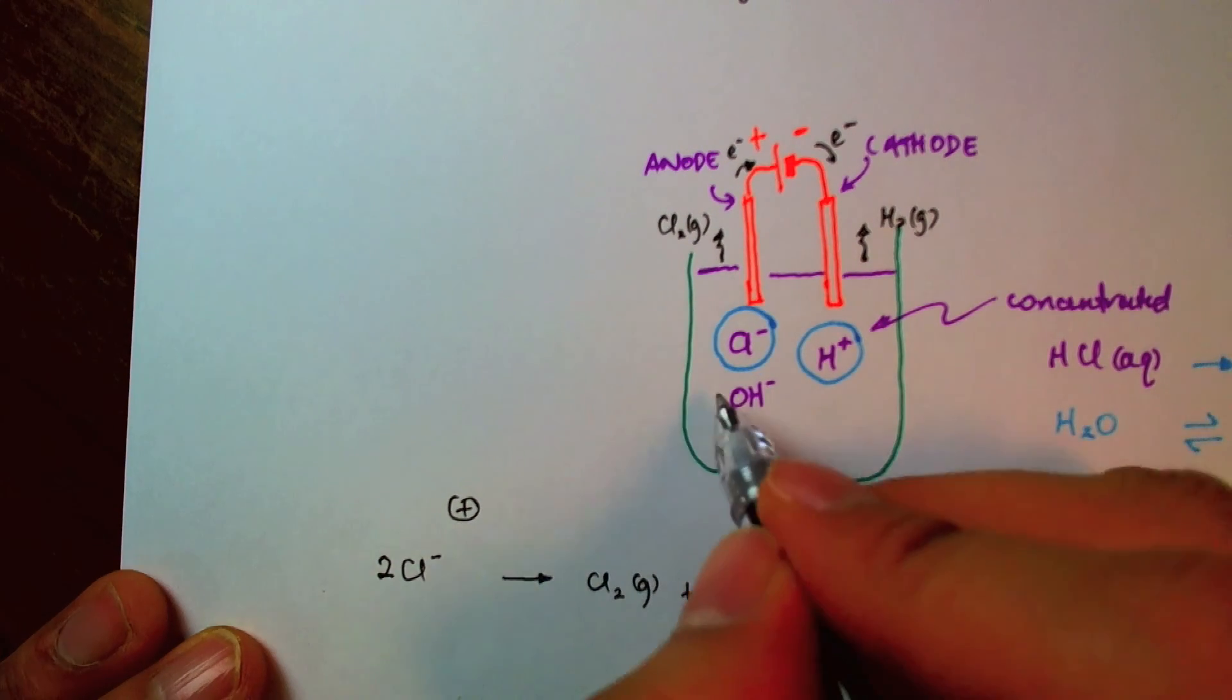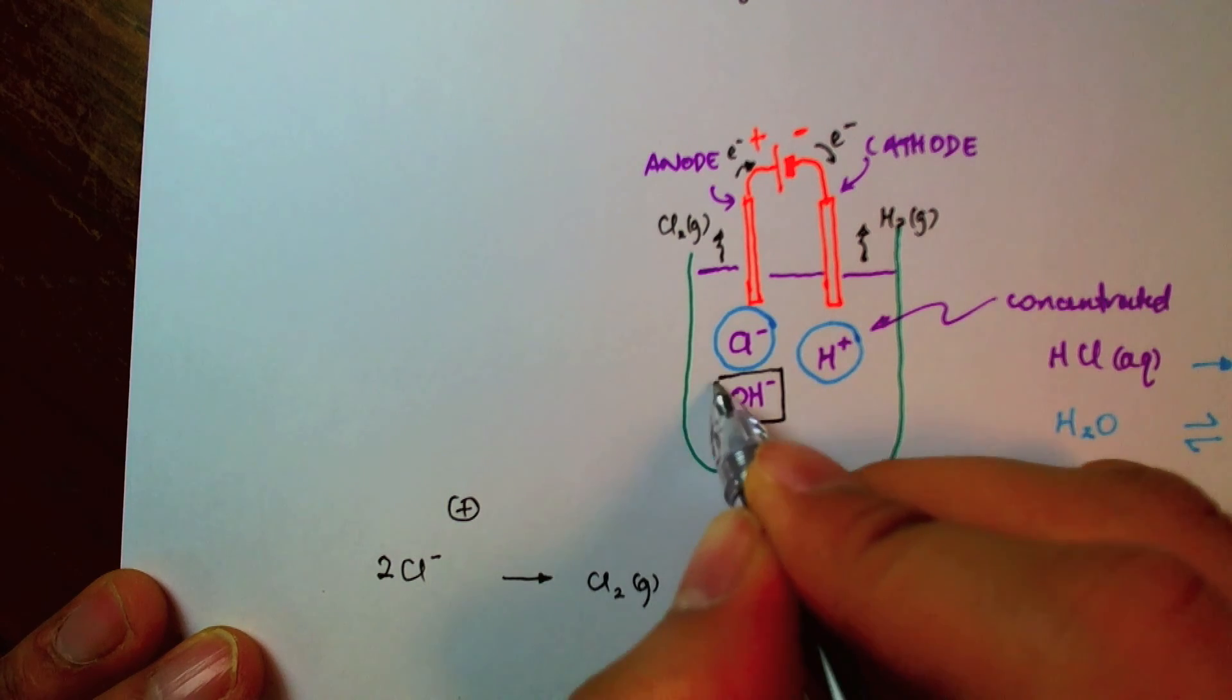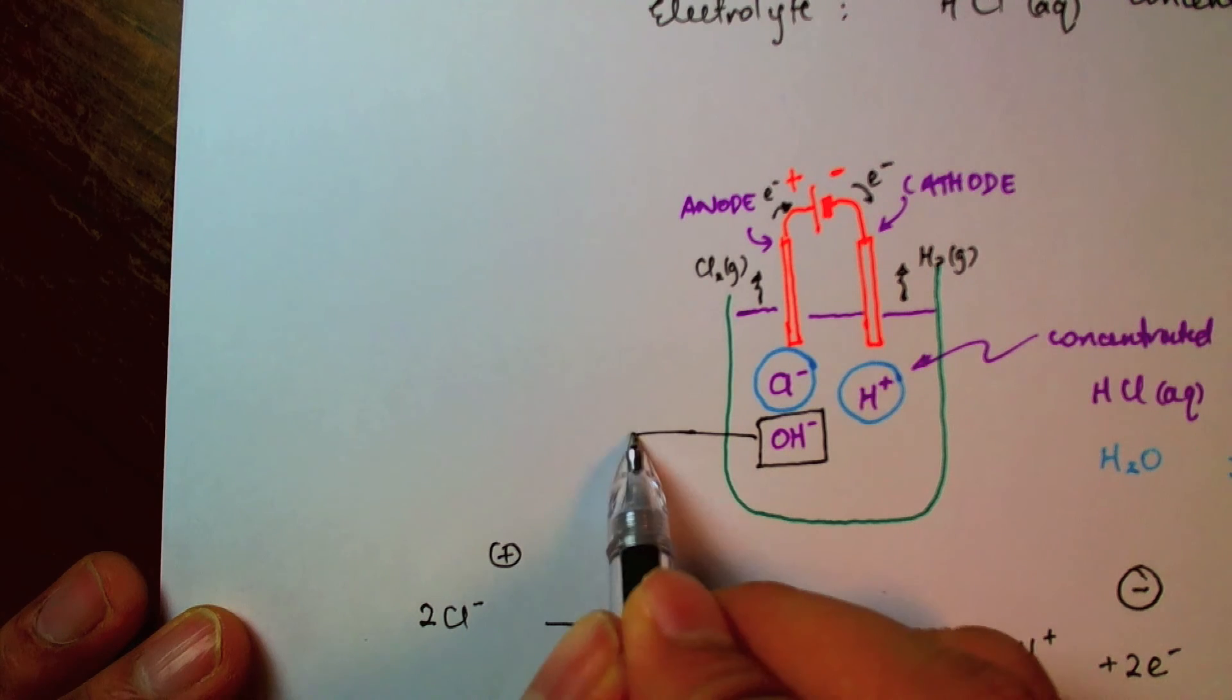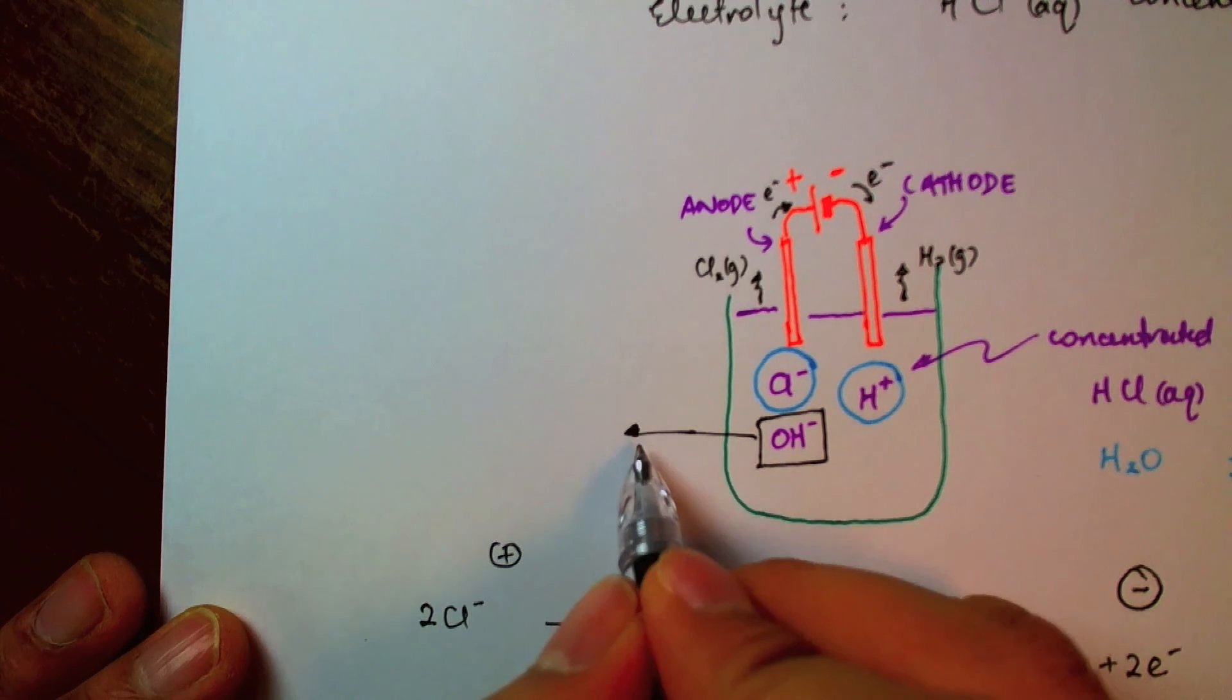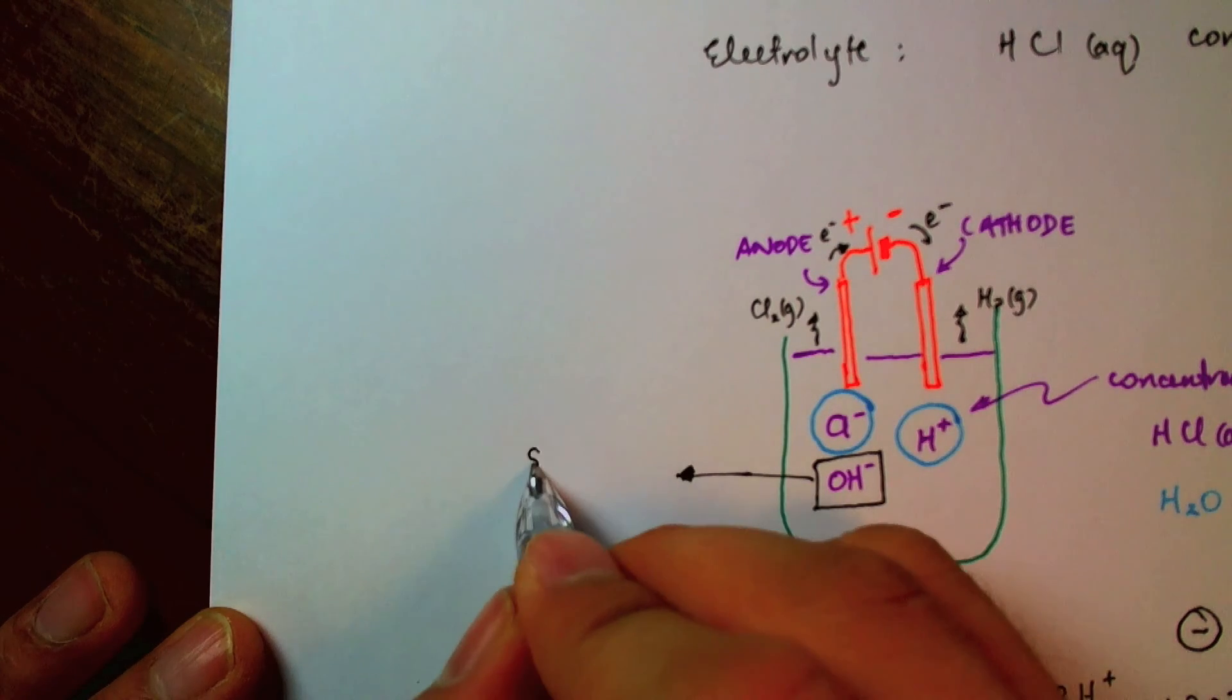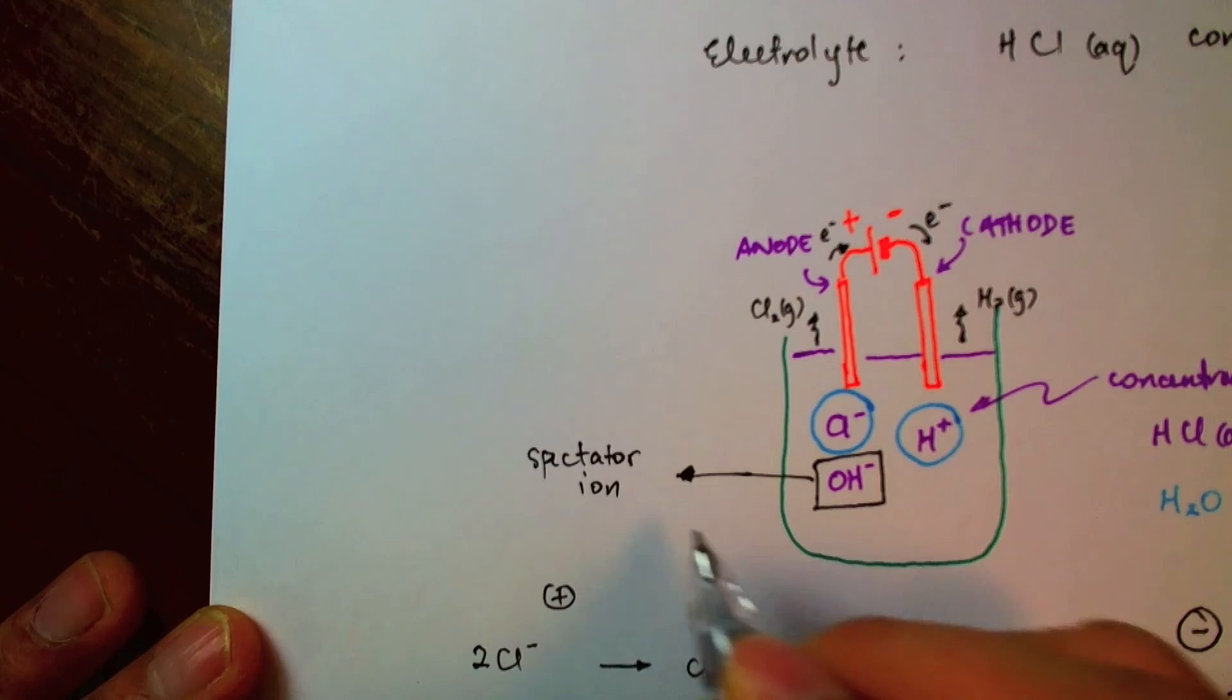And so in this case, the spectator ion, the ion that didn't actually take part in the reaction. So it's just sitting there watching the game going on without taking part in it. So we have the spectator ion, hydroxide ion.